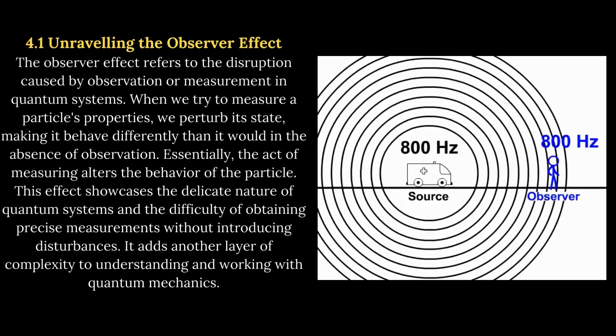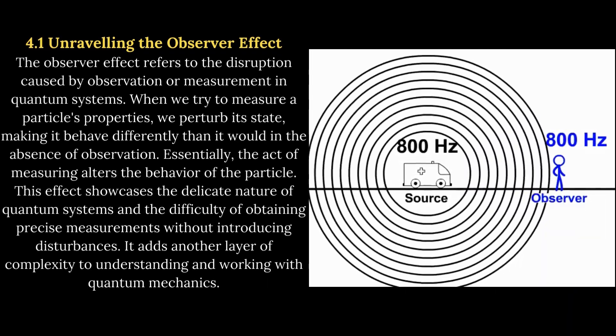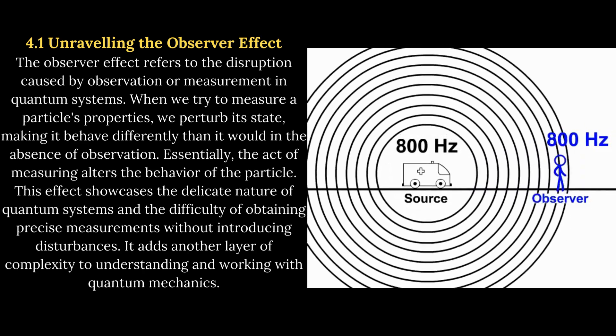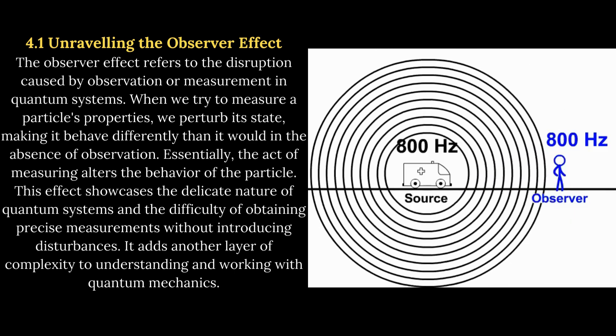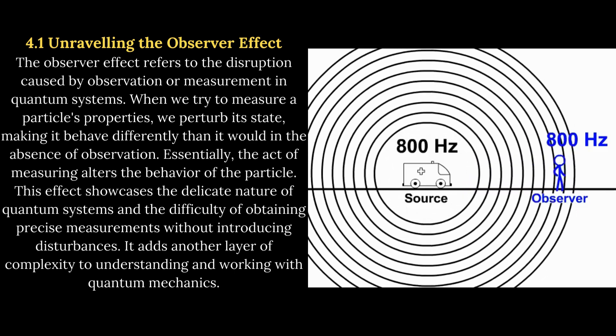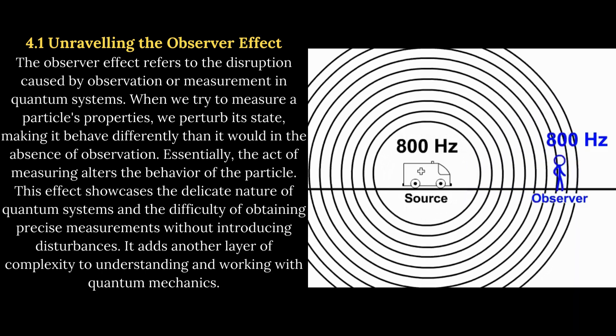4.1 Unraveling the Observer Effect. The observer effect refers to the disruption caused by observation or measurement in quantum systems. When we try to measure a particle's properties, we perturb its state, making it behave differently than it would in the absence of observation.